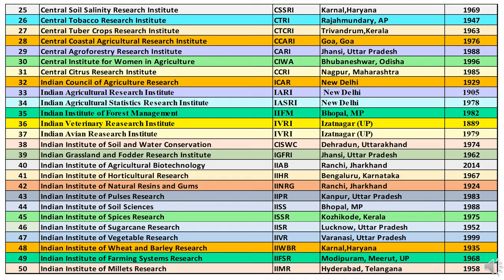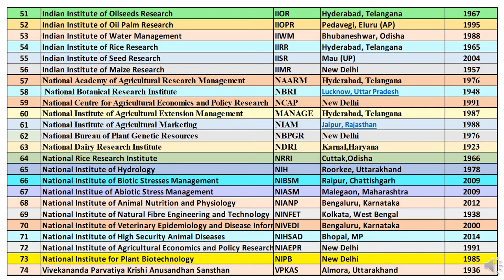Forty-eighth is IIWBR — Indian Institute of Wheat and Barley Research — headquartered at Karnal, Haryana, established in 1935. Forty-ninth is IIFSR — Indian Institute of Farming Systems Research — headquartered at Modipuram, Meerut, Uttar Pradesh, started in 1968. Fiftieth is IIMR — Indian Institute of Millets Research — headquartered at Hyderabad, Telangana, started in 1958. Next is IIOR — Indian Institute of Oilseeds Research — headquartered at Pedavegi, Eluru, West Godavari district, Andhra Pradesh, started in 1995.